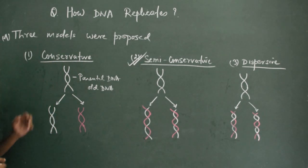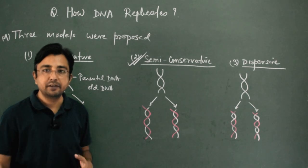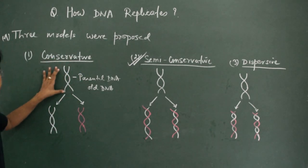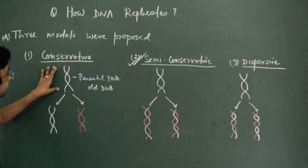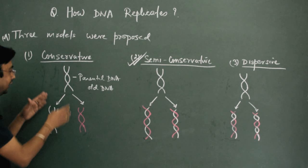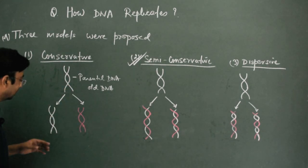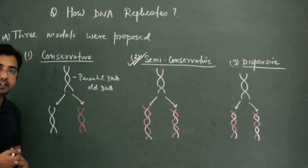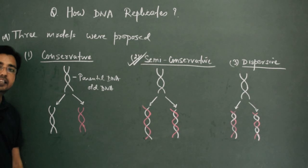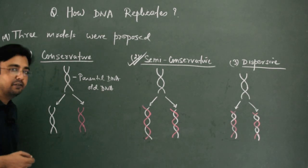According to conservative model, the parental DNA will be conserved in the next generation. This is the parental DNA represented in white color. When this double-stranded DNA replicates, it forms two double-stranded DNA in the next generation. Out of these two, one is just like the parental one. This parental DNA has been conserved in the next generation. And that's why it is called conservative model.